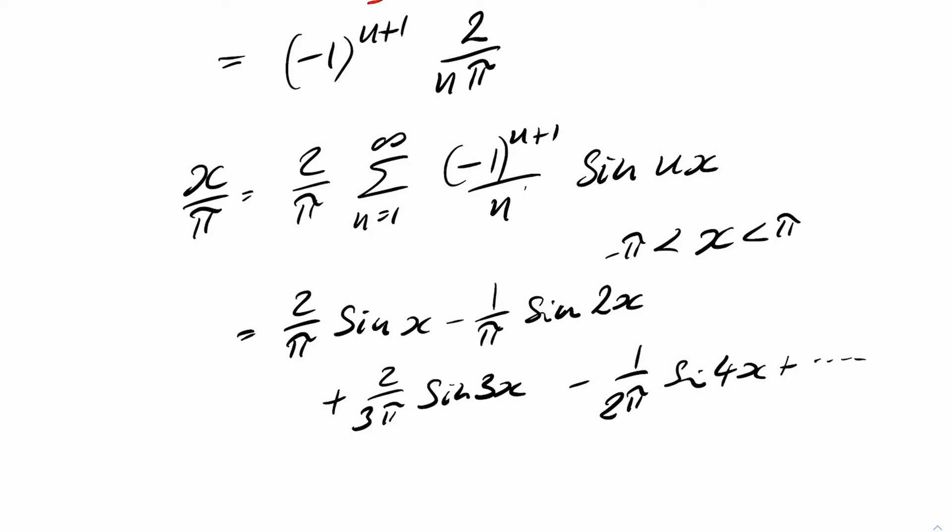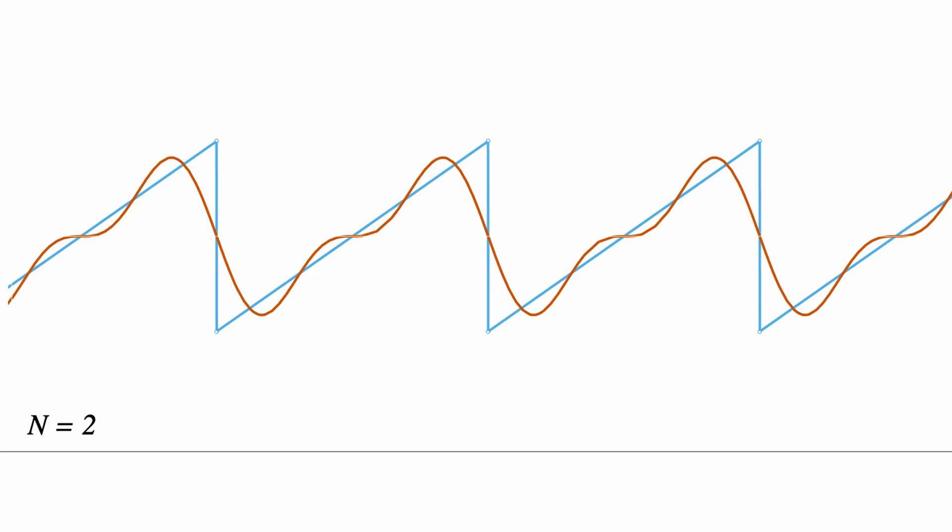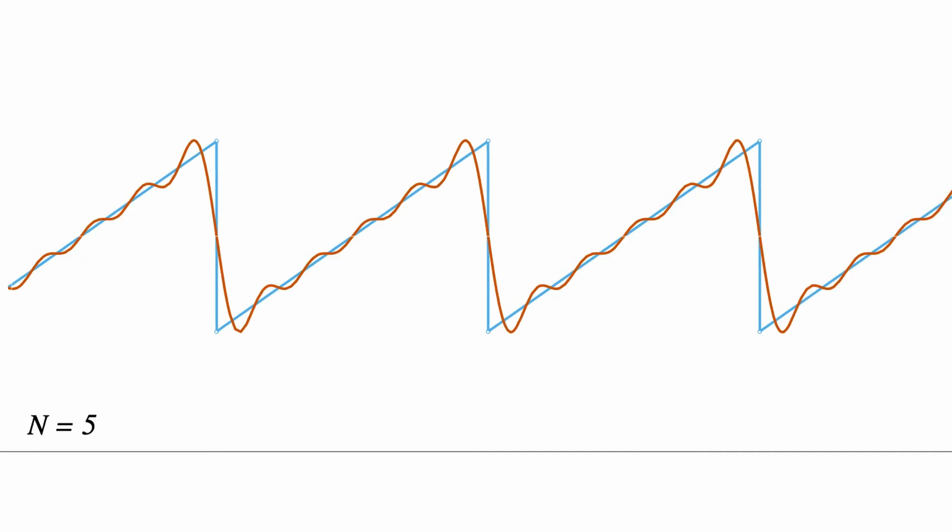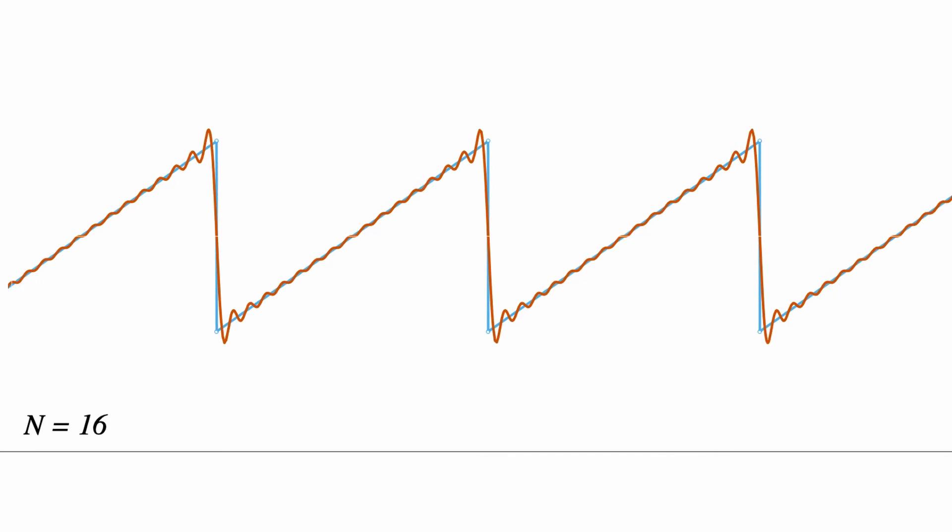So therefore I can write down this function x over pi as a sum from one to infinity where x is between pi and minus pi. So a very unusual way of expressing a function like x over pi. If we do some plots of it, add these up as partial sums like we did for Taylor polynomials, we can see that adding on each one gives a better and better approximation to the function.